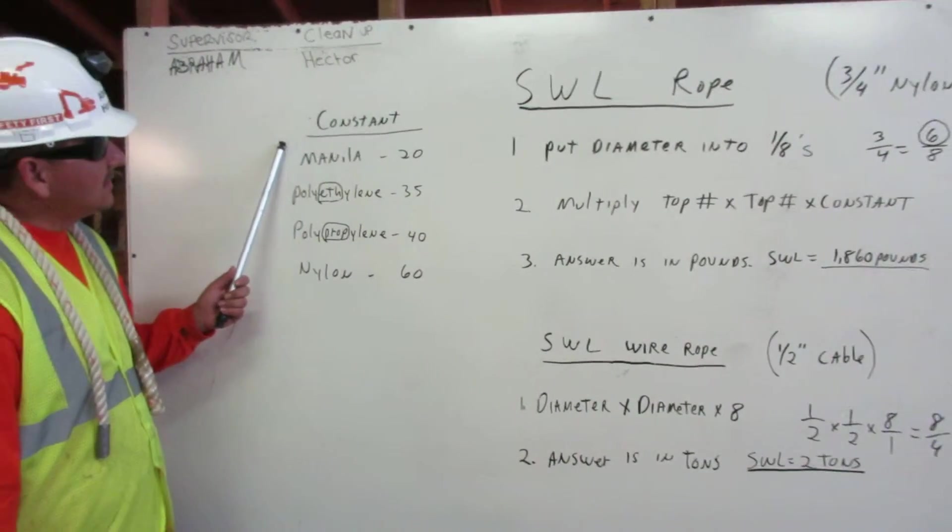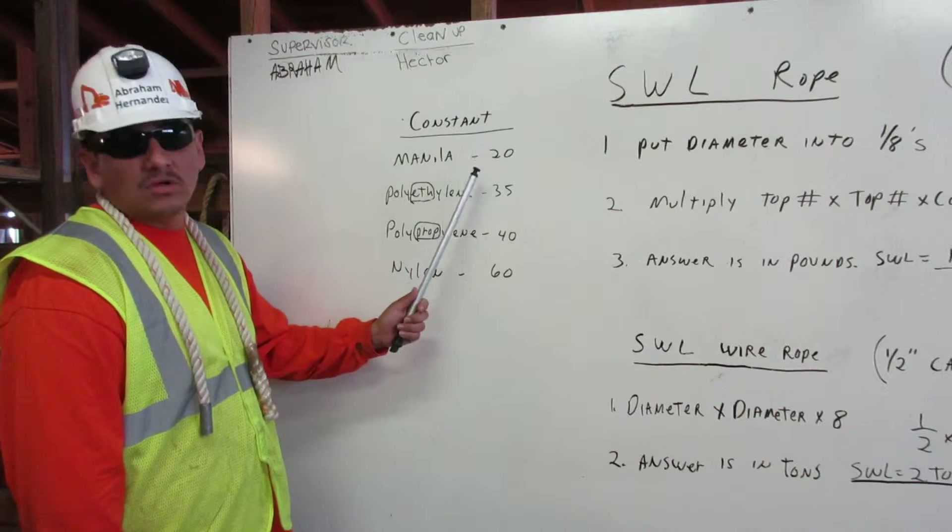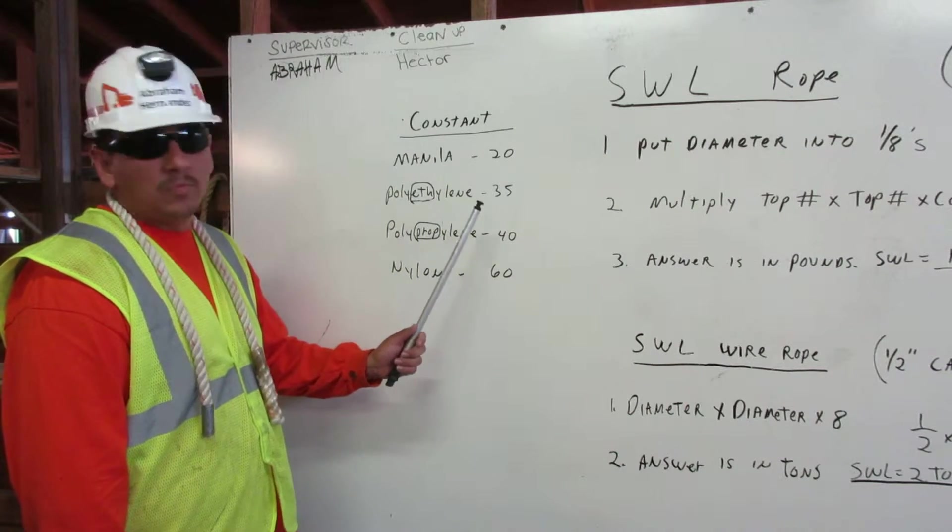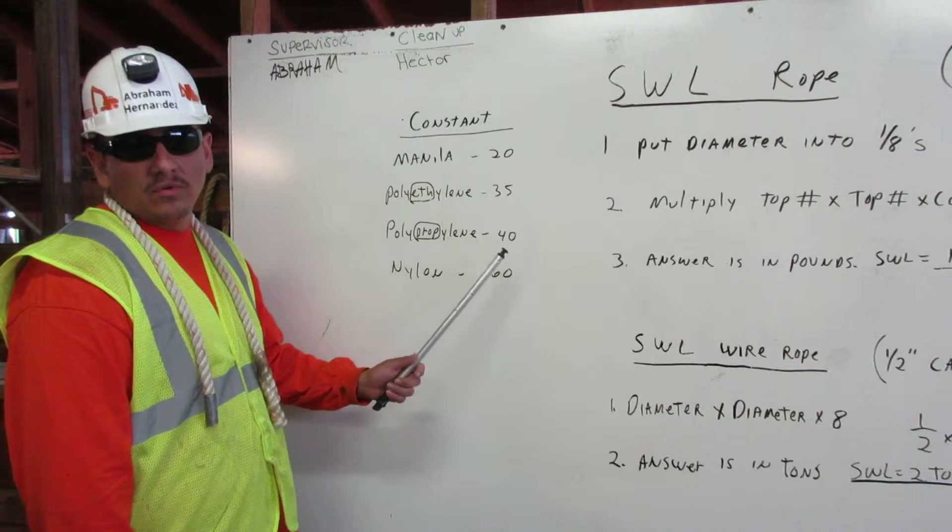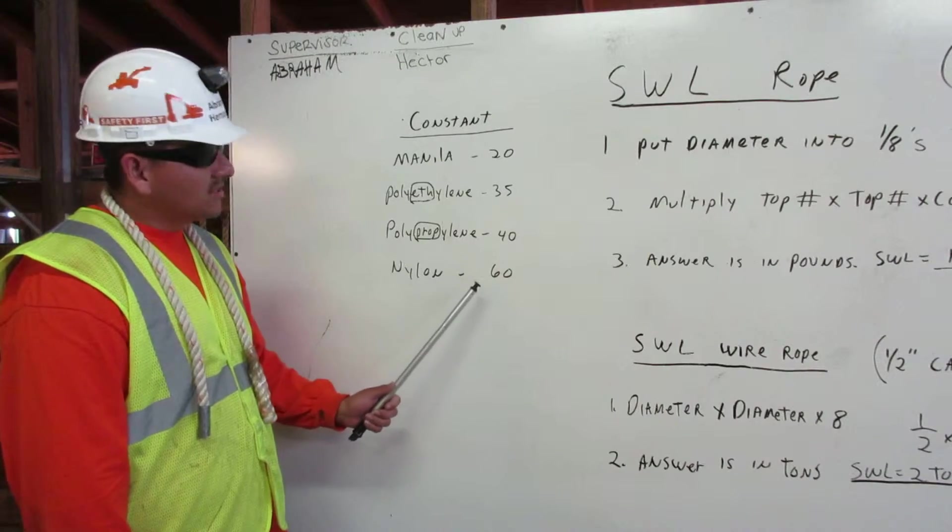Here we have a list of the constants for the different types of ropes. If you're using manila rope, the constant is twenty. If you're using polyethylene rope, the constant is thirty-five. If you're using polypropylene rope, the constant is forty. And if you're using nylon, the constant is sixty.